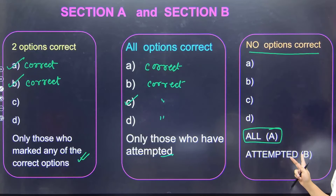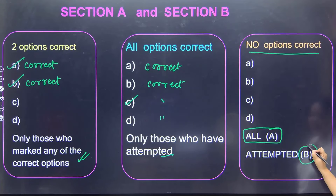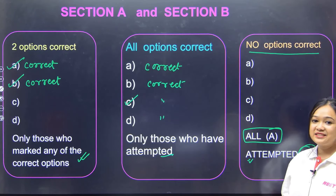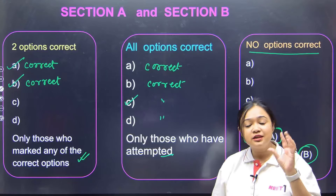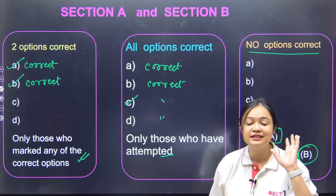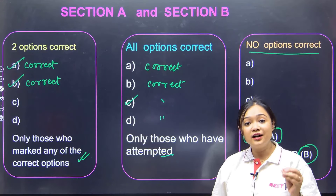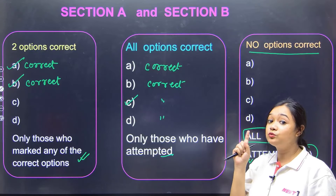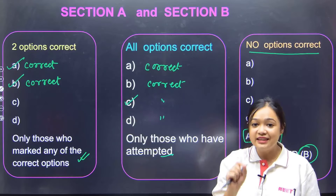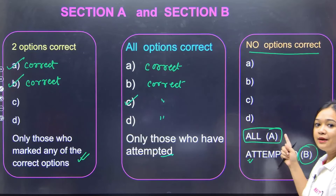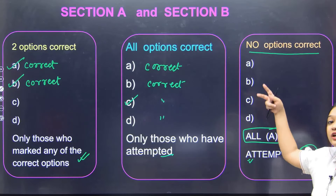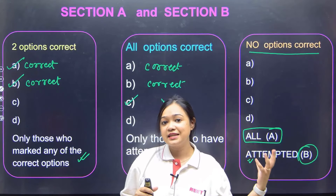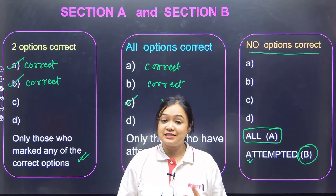Aur Section B mein, yeh question ka mark usi ko milega jisne isse attempt kiya hai, kyunki Section B mein 15 questions hain, usme se sirf 10 hi attempt karne hain aapko. Aur agar un 10 mein se aise question hain jinke 4 ke 4 option galat hain, par usko aapne attempt kiya hai, then you will get marks. But isi wale option mein hai thoda Section A aur Section B mein garbari bachon — toh risk lena hai, toh calculated risk lena. Jaan lena ki Section A aur Section B mein marking scheme kaisi hai.